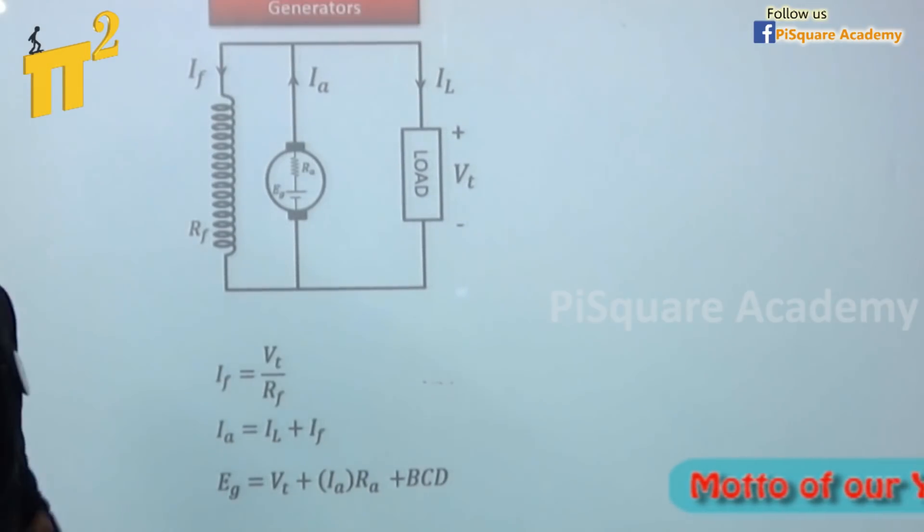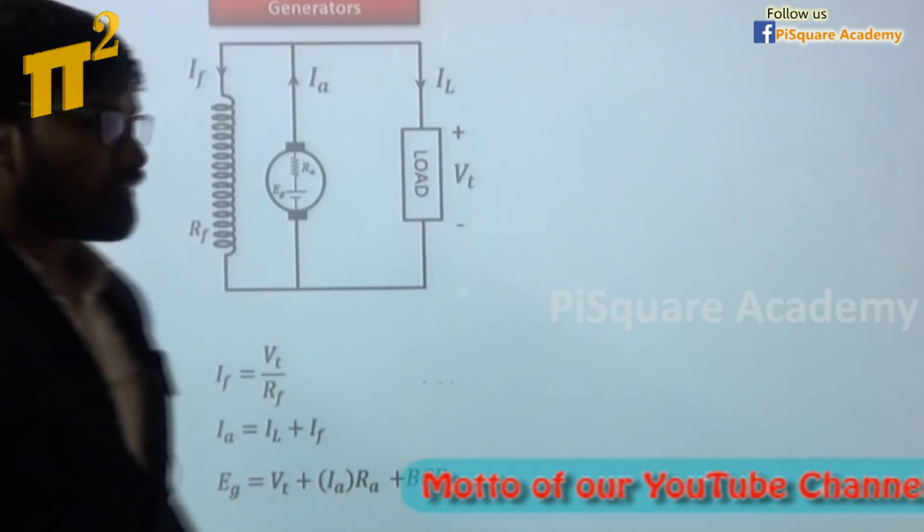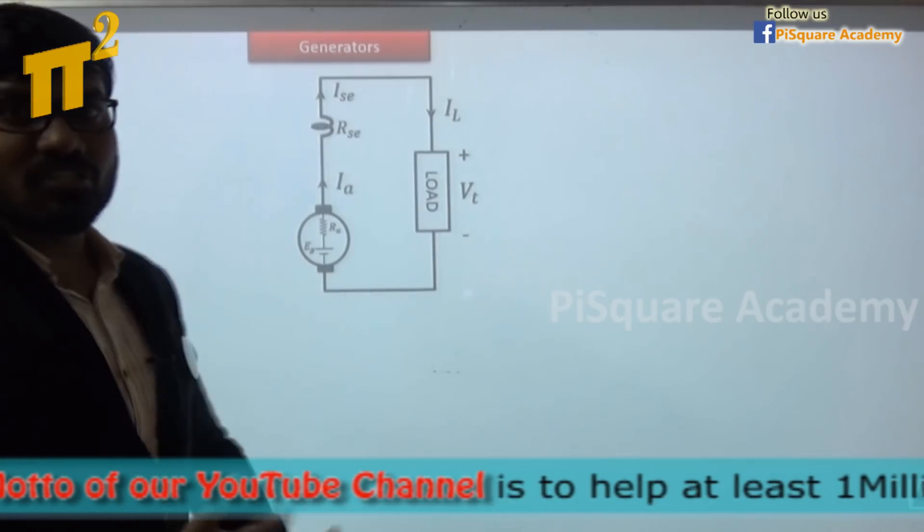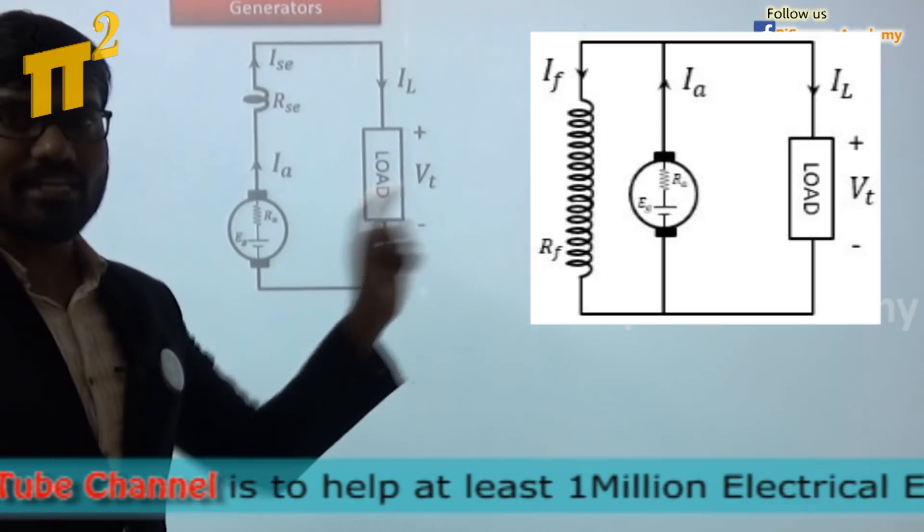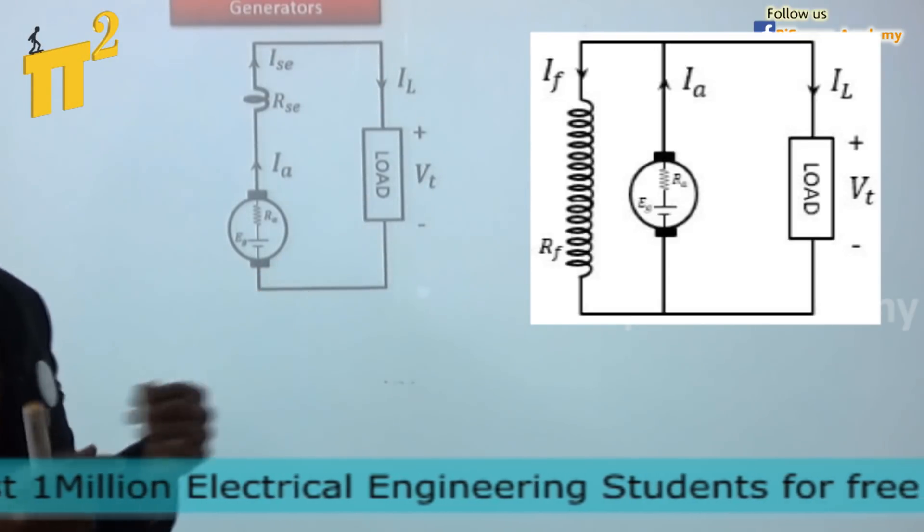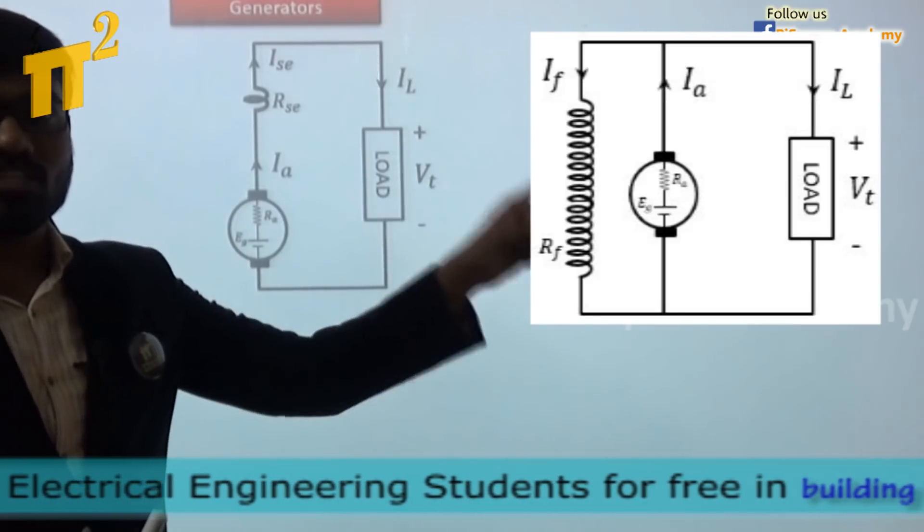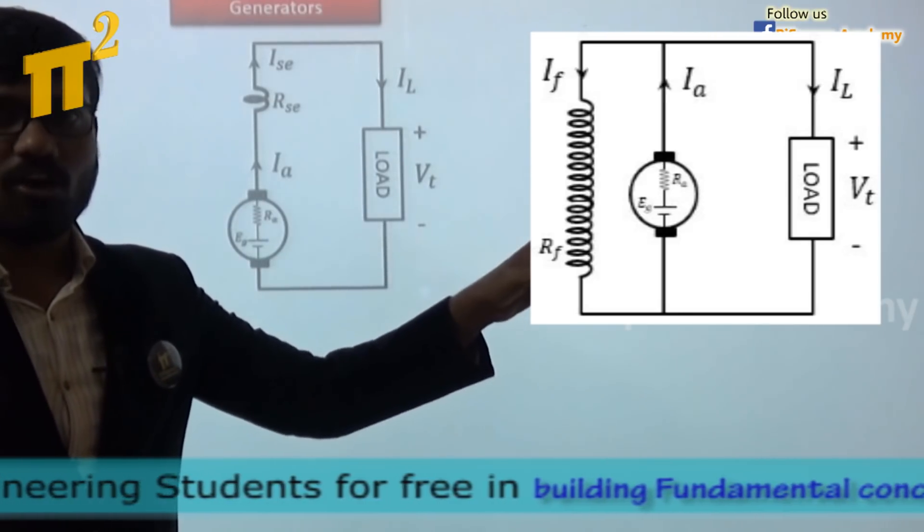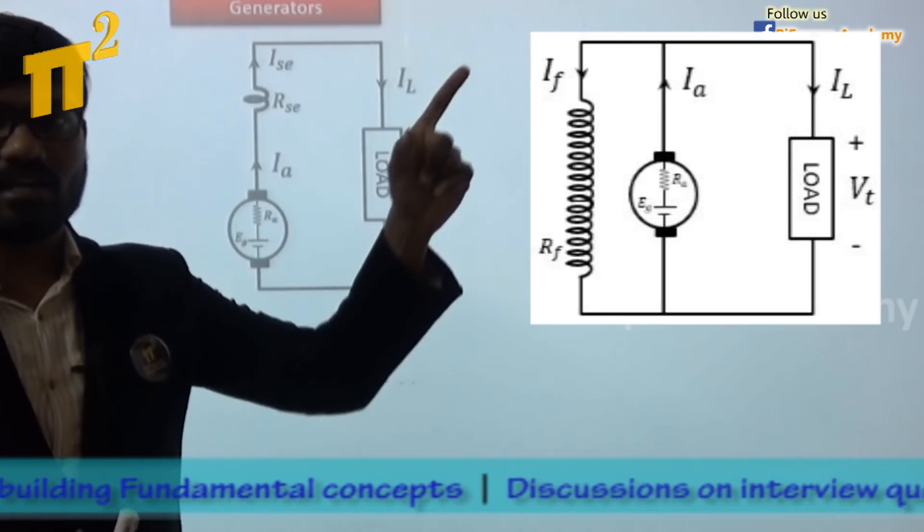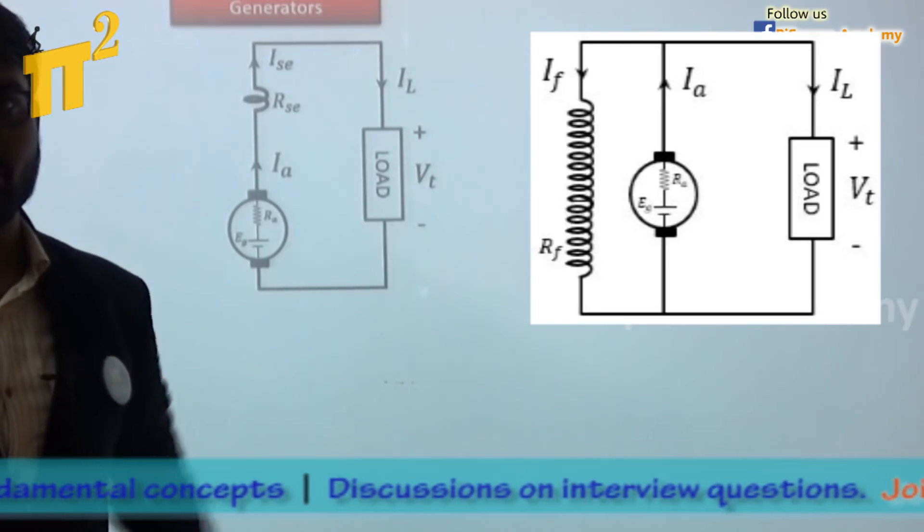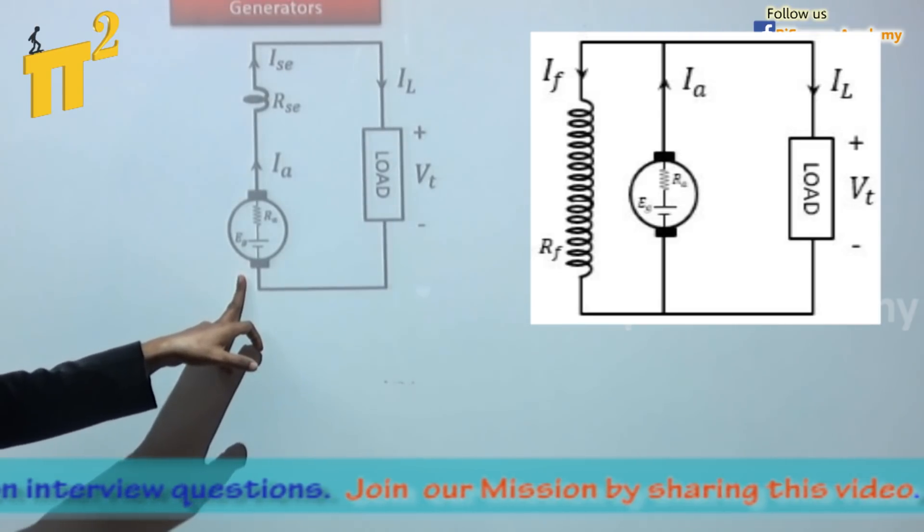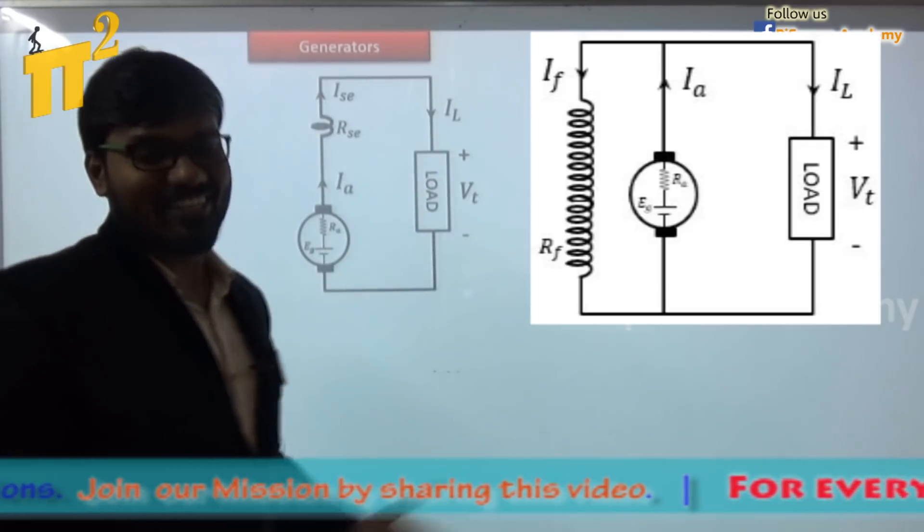People started thinking, why should I connect field winding in parallel? Why not in series? Why not in series with armature? Yes, you can do that. This is also called a self-excited DC generator. To distinguish these two generators, we also call this one as self-excited. If you want to distinguish these two, I will call this one as shunt field DC generator or in short DC shunt generator or simply shunt generator. The word shunt means diversion because current is diverting, hence shunt generator. And this is called series field DC generator. In short, DC series generator or simply series generator.